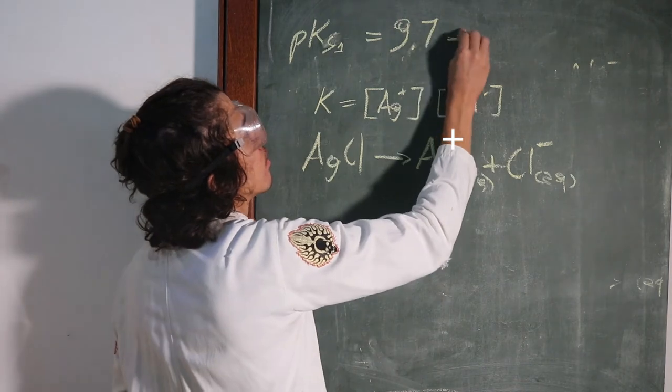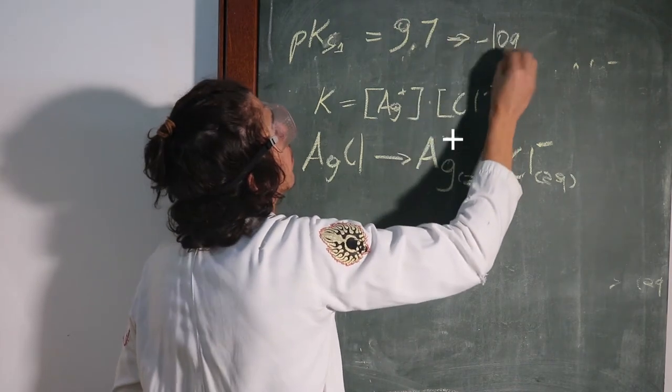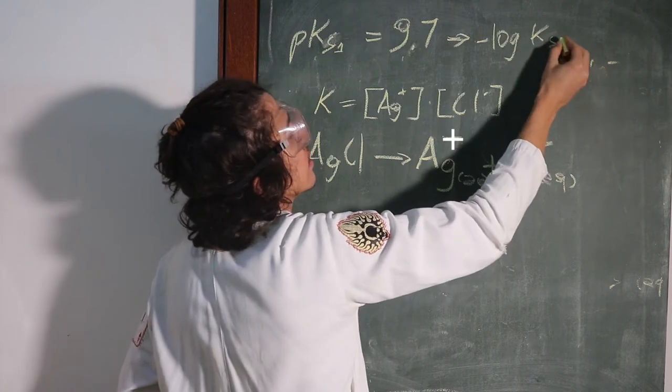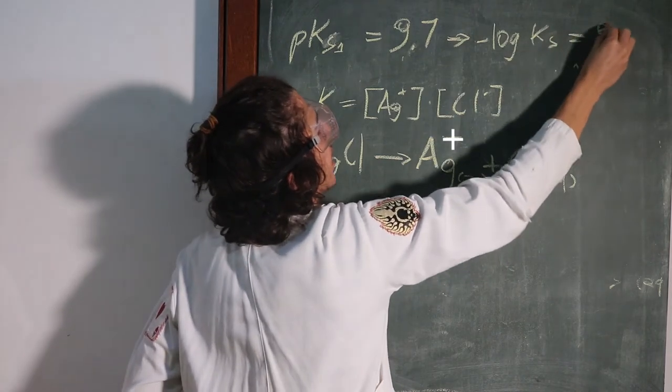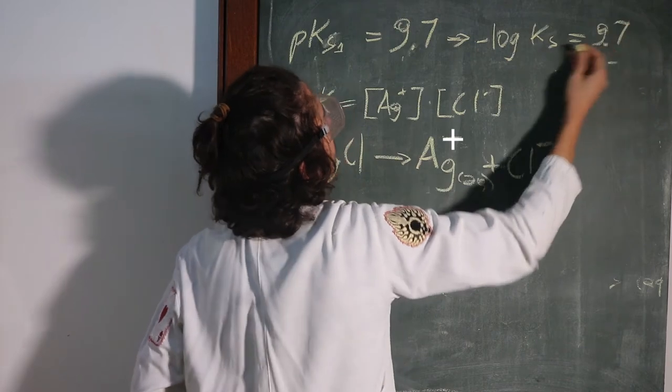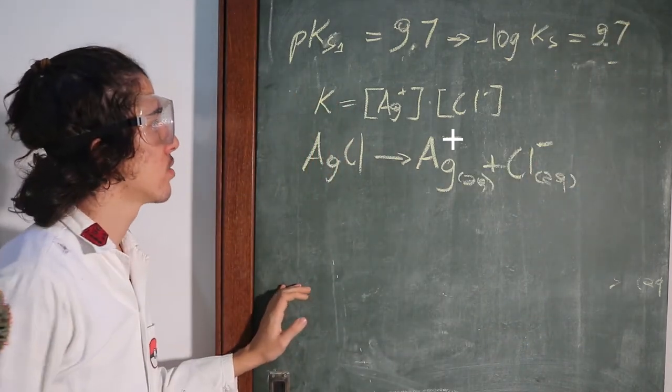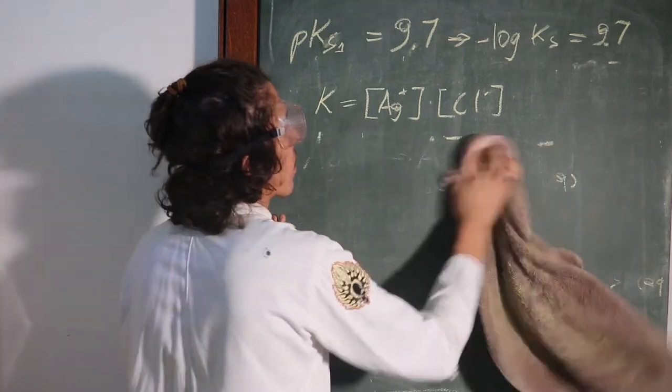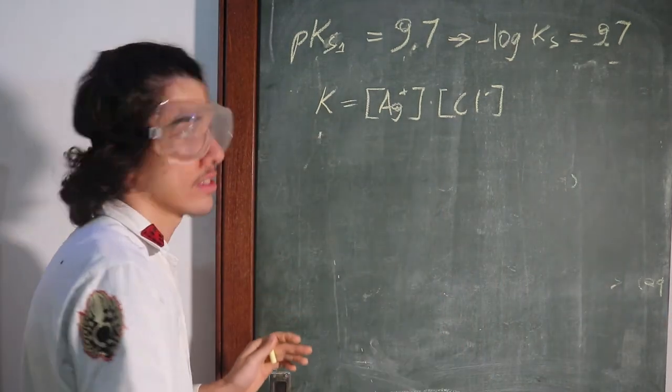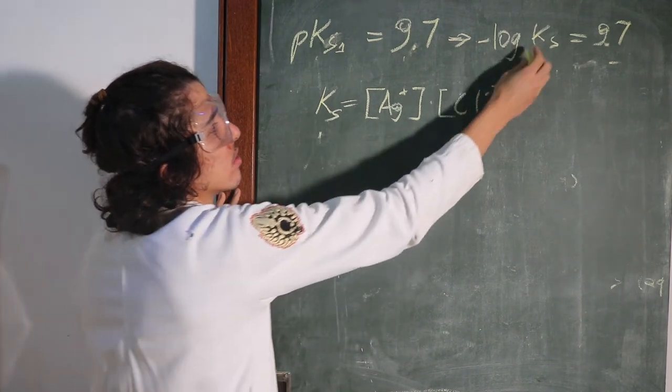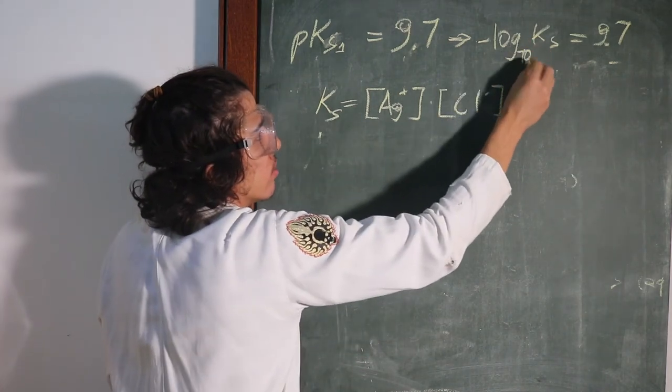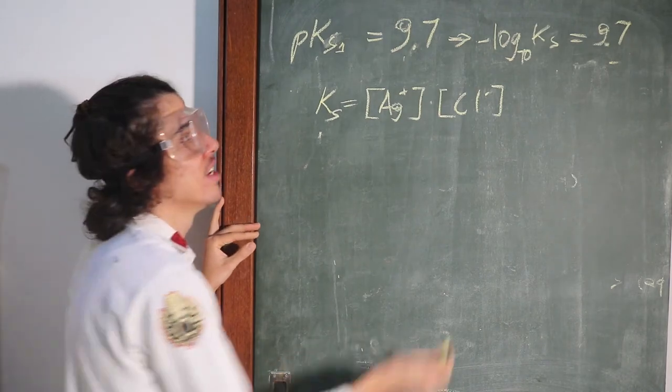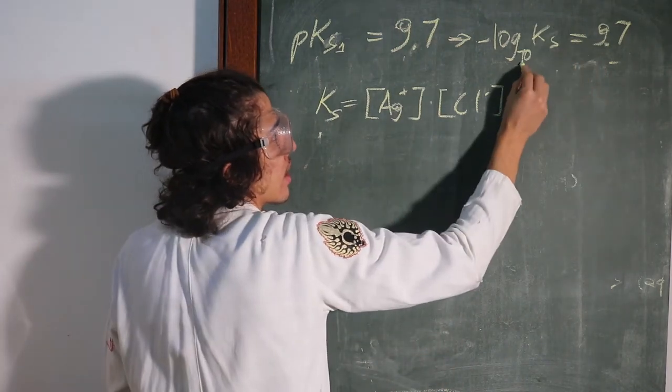Then we have minus log of Ks that is equal to 9.7. Okay, so if we're gonna do this Ks here, we've got 10 on the base because there's nothing telling other thing, so the K is the base.